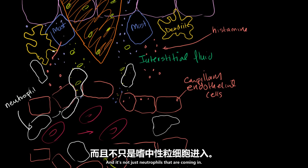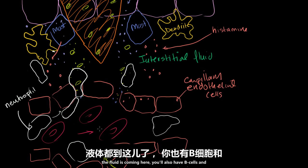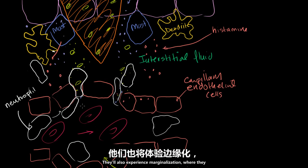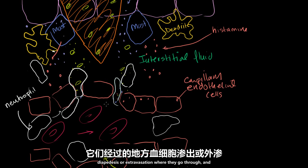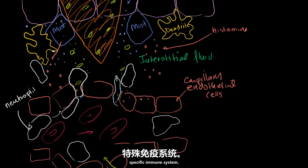It's not just neutrophils that are coming in. Because this is an area of congestion and all of the fluid is coming here, you'll also have B cells and T cells making their way in. They'll also experience marginalization — rolling up against the sides of the capillary — and then diapedesis or extravasation where they go through. And then they'll be activated and can actually engage the specific immune system.